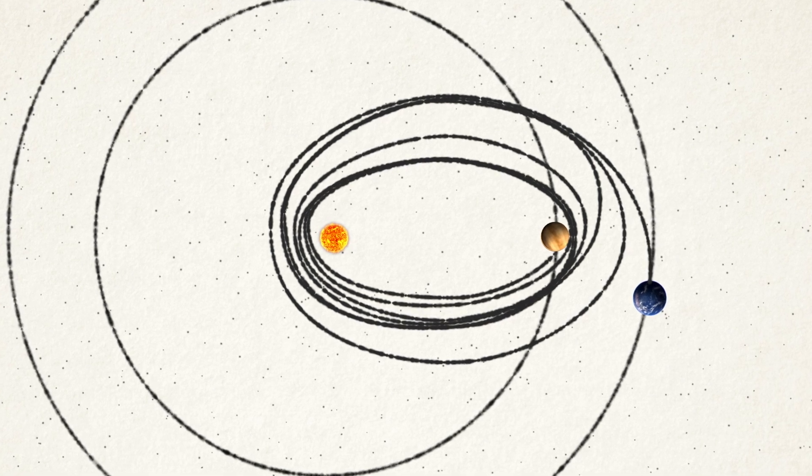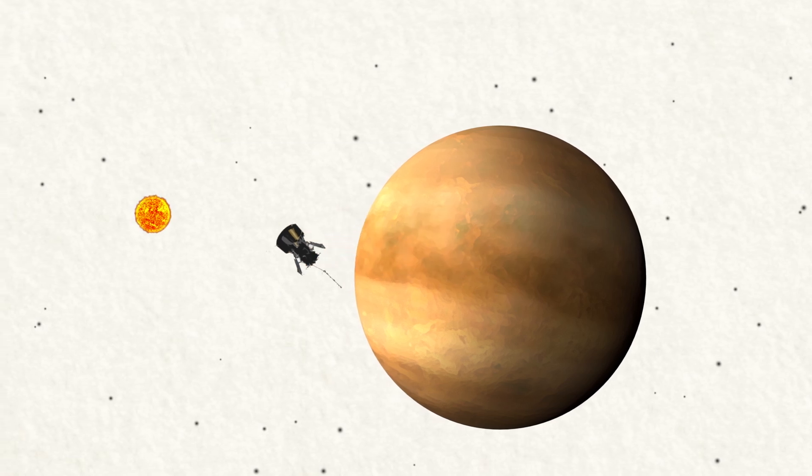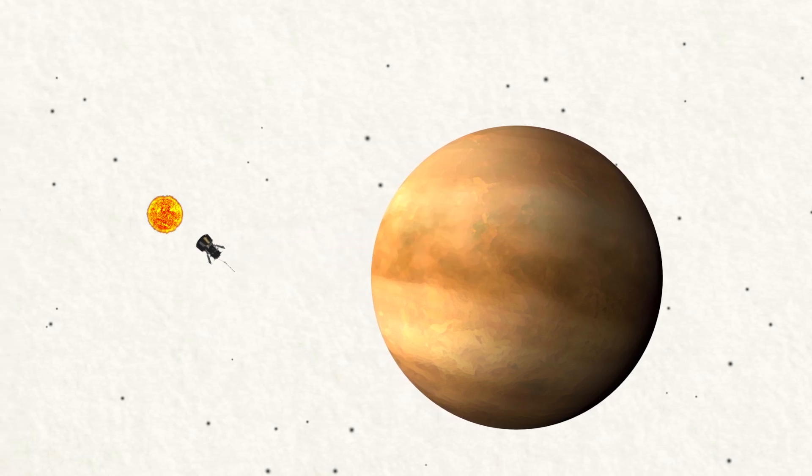In this case, rather than speeding up the spacecraft, as in a typical gravity assist, Venus slows down its sideways motion, so the spacecraft can get close to the Sun.